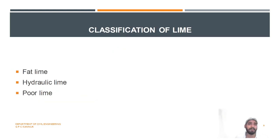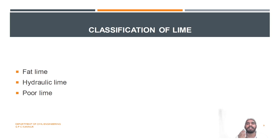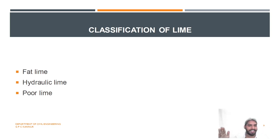Next is classification of lime. Lime can be categorized into three types: fat lime, hydraulic lime, and poor lime.